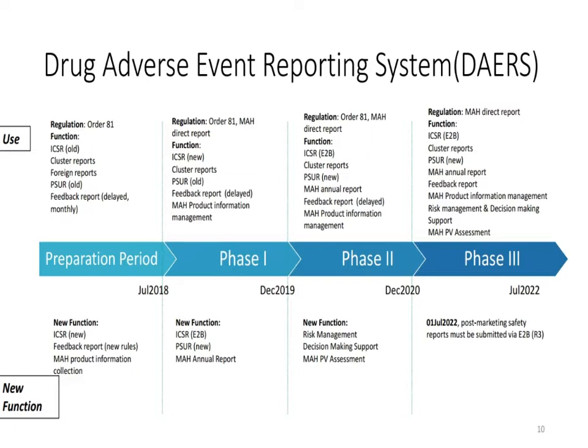Post-marketing safety reports have no R2 XML transition period; we move directly from online reporting to R3 reporting, with a total two-and-a-half year transition. The final aim is for DAIRS to have full functionality supporting risk management and helping MAHs with pharmacovigilance assessments.